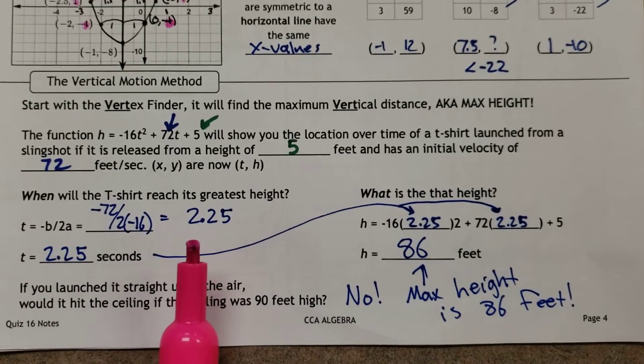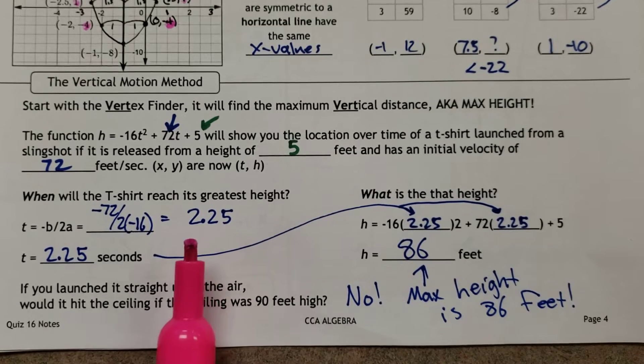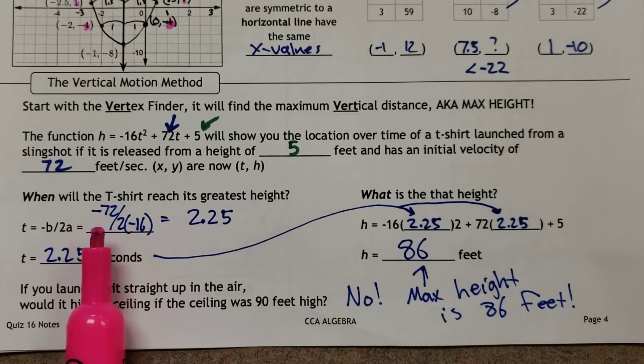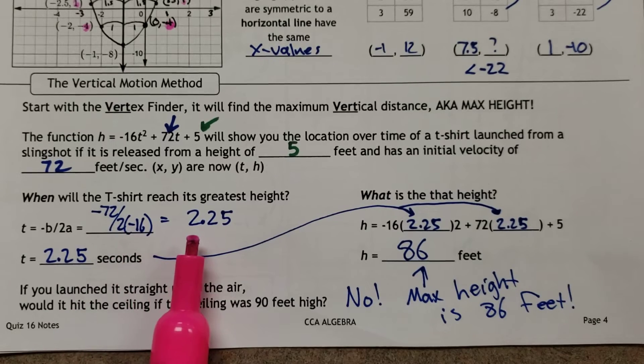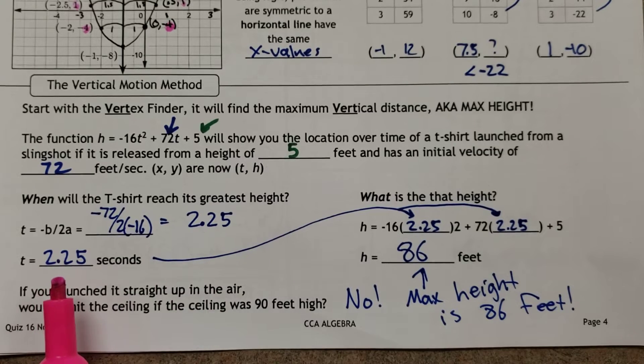Okay, so if we do -b/2a, that gives us the time it reaches its max height, which is t. So in this case, -72 over 2 times -16 turns into 2 and a quarter. So at 2.25 seconds, this t-shirt will have reached its maximum height.